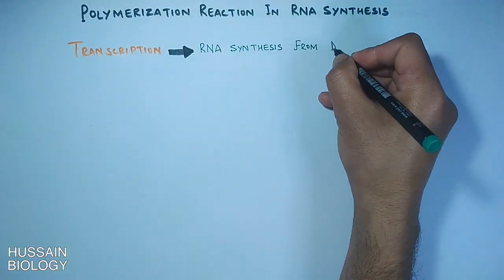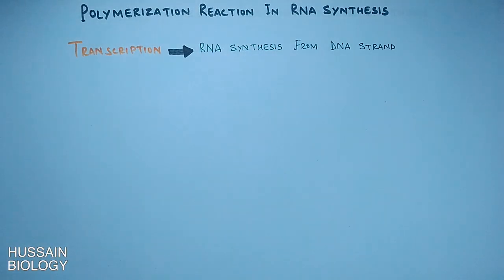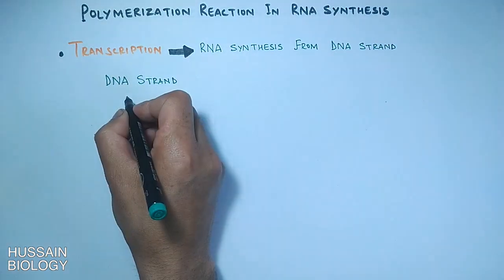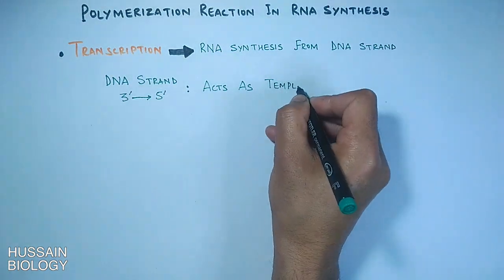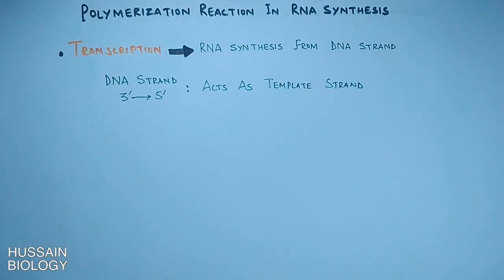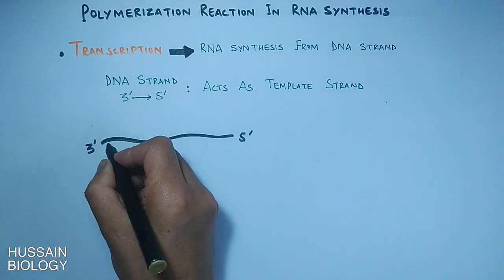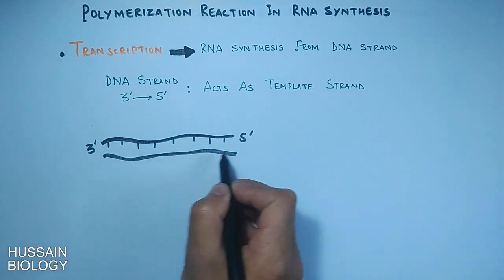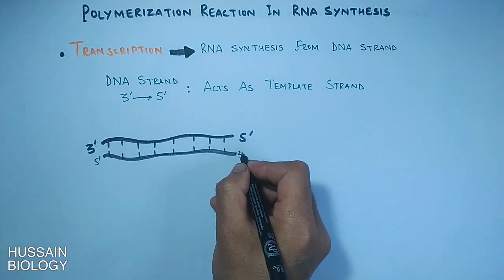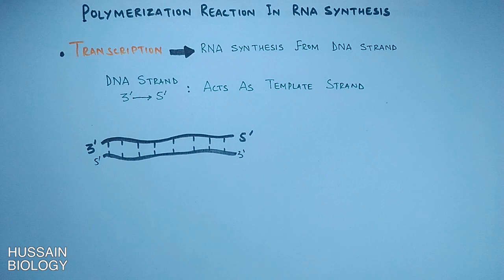The DNA strand which runs three prime to five prime acts as the template strand in the process of RNA synthesis. Any strand can act as a template strand if polymerase binds at the three prime end. In this diagram we can see a DNA molecule having two strands running in opposite directions, so either of the strands can act as template strand.